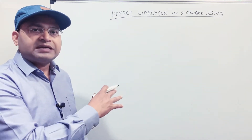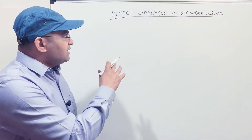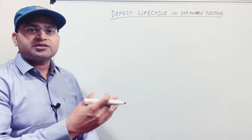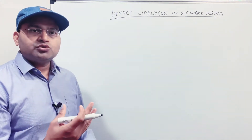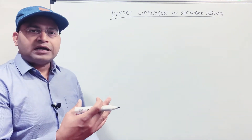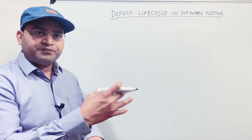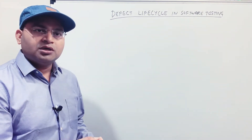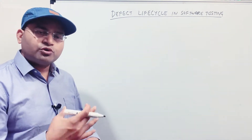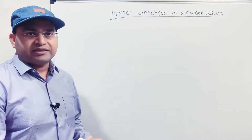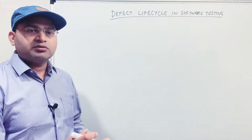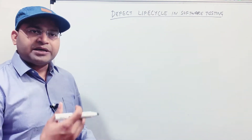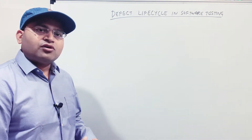Before we dive into the defect lifecycle, let me correlate it with a real example. Say you have bought a phone, you have some issues, and you want to contact customer support. You go to the website, click on support, fill in the support form, and submit the ticket. That ticket goes into the backend and follows a certain process — once raised, it is a new ticket for them, and if they need information, they assign it back to you.